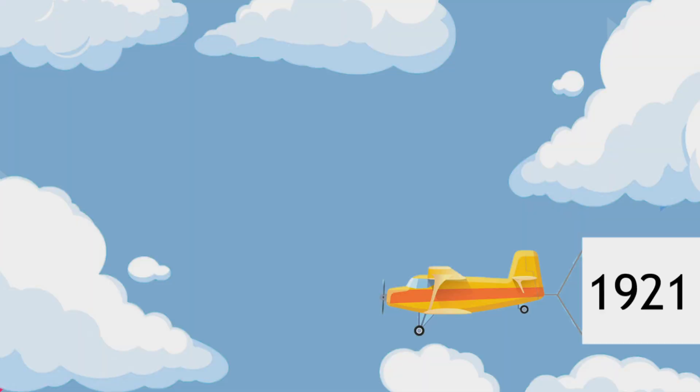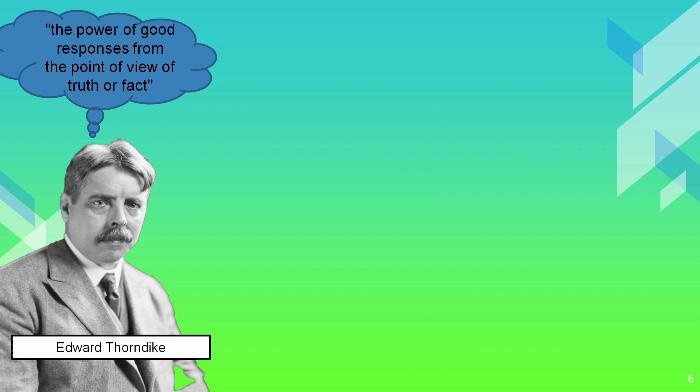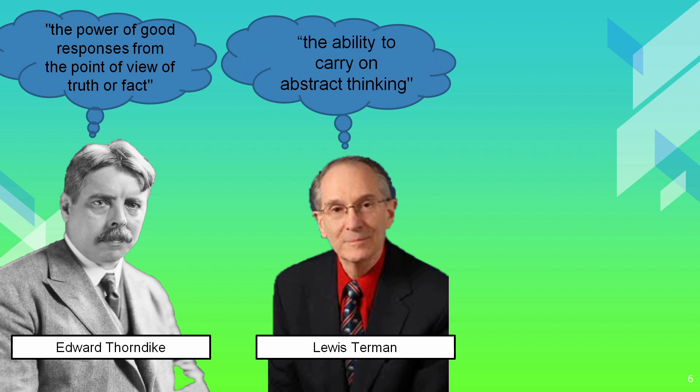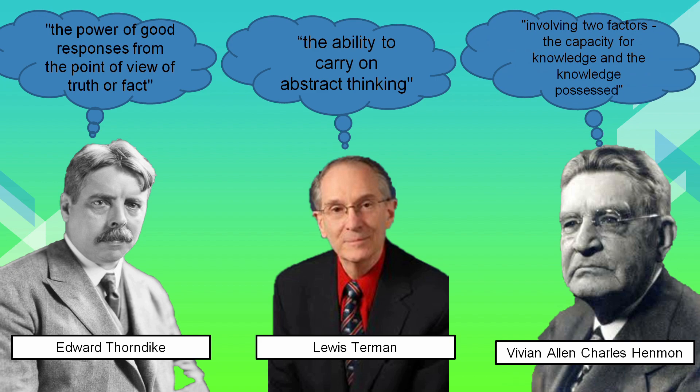What is intelligence? A symposium of 17 experts in the field in 1921 discussed the meaning of intelligence and came up with almost as many interpretations as there were experts present. Intelligence was variously described as the power of good responses from the point of view of truth or fact, the ability to carry on abstract thinking involving two factors: the capacity for knowledge and the knowledge possessed.